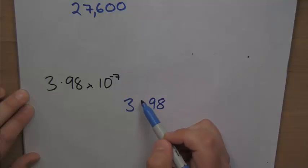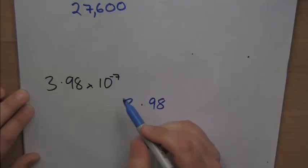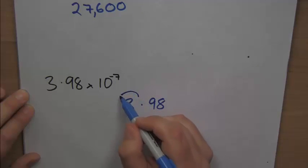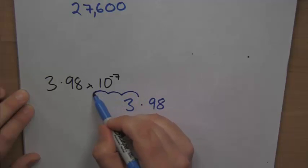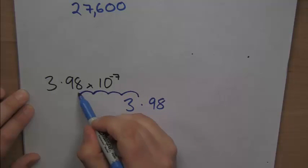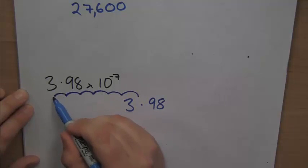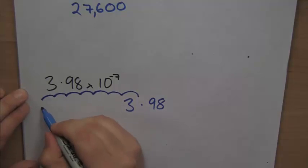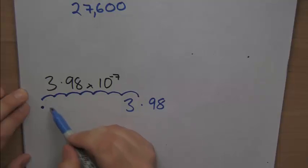Now, I'm going to go 7 jumps, but I'm going to go the opposite way to the way I did before. 1, 2, 3, 4, 5, 6, 7. So that's where the decimal place is going to live, decimal point sorry. And I'm going to fill all these gaps with 0's.